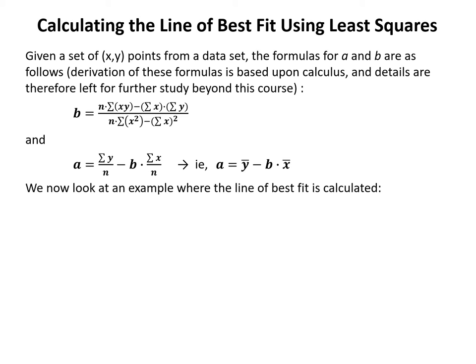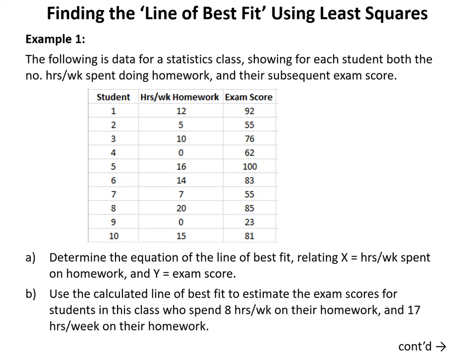In example 1 we have data for a statistics class showing for each student both the number of hours per week spent doing homework and their subsequent exam score. In part a we determine the equation of the line of best fit relating x equals hours per week on homework to y equals exam score. In part b we use the line of best fit to estimate exam scores for students spending 8 and 17 hours per week on homework.